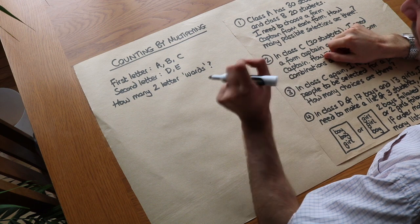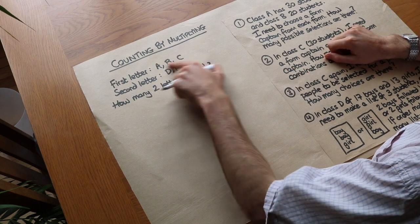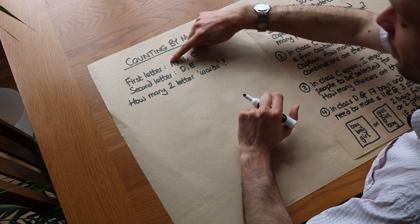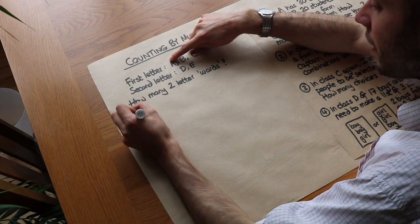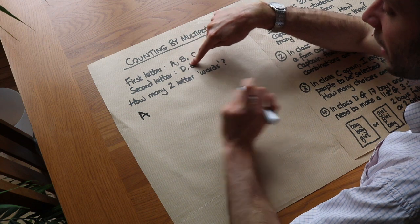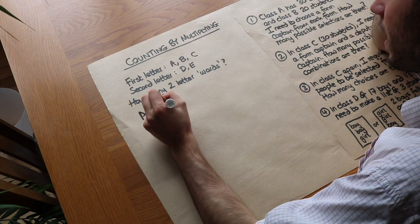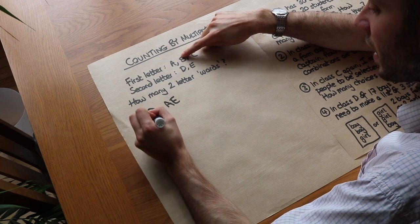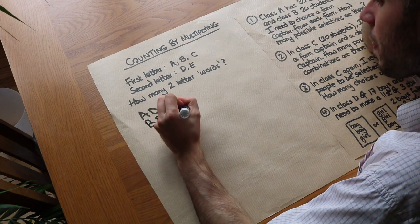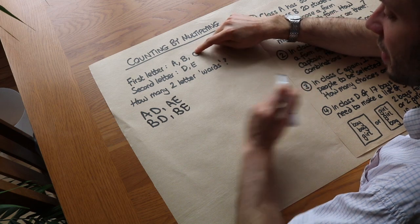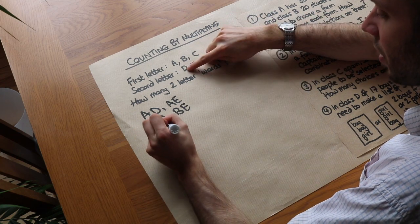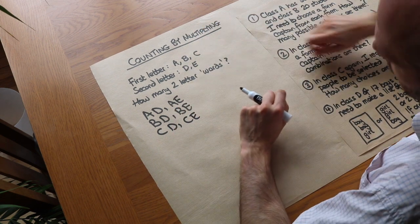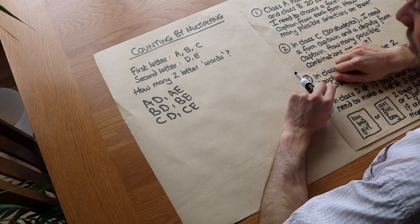I just mean any sequence of two letters where the first letter is one of these and the second letter is one of these. If we fix the first letter as A, the second letter could be D or E, so we could have AD or AE. If we fix the first letter as B, we could have BD or BE, and if we fix the first letter as C, we could have CD or CE. It's a bit like multiplying out brackets where you're choosing one thing from the first bracket and one thing from the second bracket.